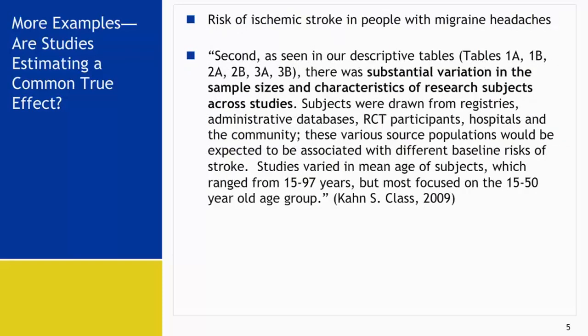Here is another example that examined the risk of ischemic stroke in people with migraine headache. The authors wrote: there was substantial variation in the sample sizes and characteristics of the research subjects across studies. Subjects were drawn from registries, administrative databases, randomized controlled trial participants, hospitals, and the community — these various source populations would be expected to be associated with different baseline risk of stroke. The studies also varied in mean age of subjects, ranging from 15 to 97 years, with most focused on the 15 to 50 year old age group.